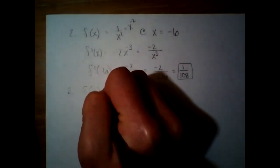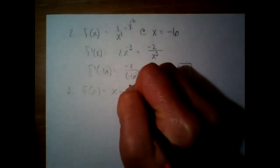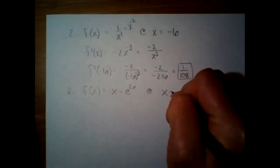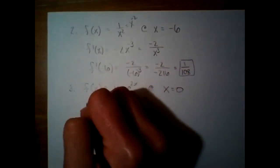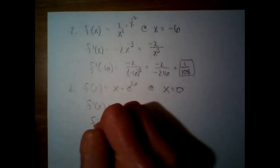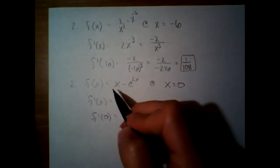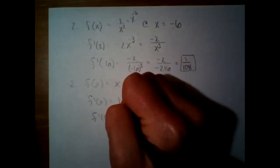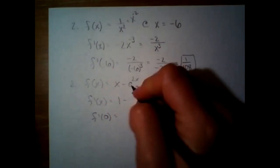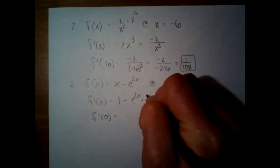I also want to do number three. This one was really similar — we want the derivative at zero, so we are going to find f prime and then plug in zero. The derivative of just x is one, and the derivative of an exponential is itself.